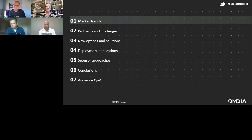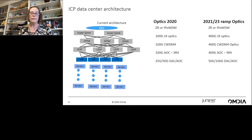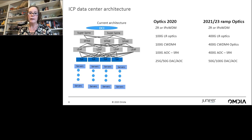Thanks Alan, and welcome everybody. This is the agenda — I'll go through a few market trends, then our other two speakers will do the majority of the presentation, and I'll come back for conclusions and the audience Q&A. When we talk about 400G in this webinar, we're talking primarily about inside the data center, specifically internet content provider data centers. This is a generalized current architecture with everything from DCI, super spine, spine, leaf, top of rack, and servers — the most important part of the data center.